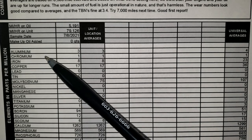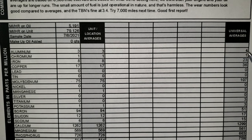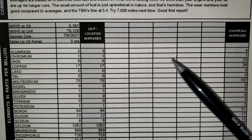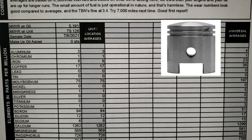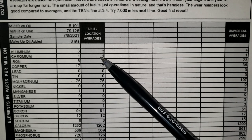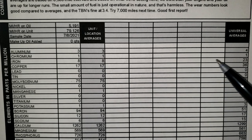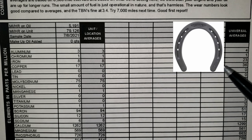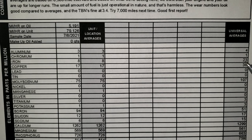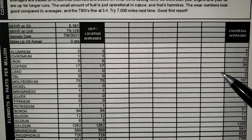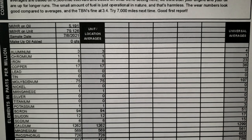Looking at the first element: aluminum is 3, universal average is 4 — not really worth mentioning, but that could come from piston skirts. Chromium is 1, universal is 1 — not worth mentioning. Iron is 8; you have iron all throughout your engine so that could come from anywhere, but universal is 23, so that's a good number. Copper is 17, universal is 36 — a good number that could come from bearings or bushings.